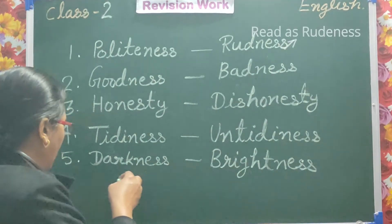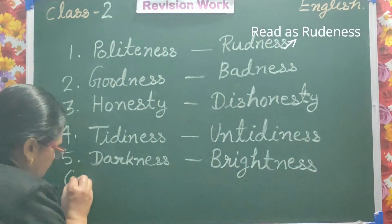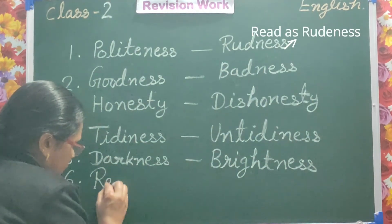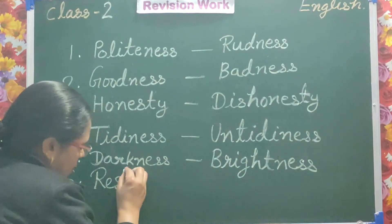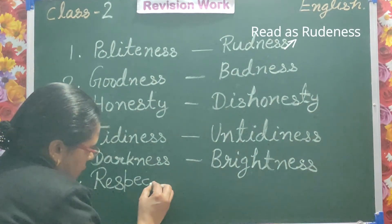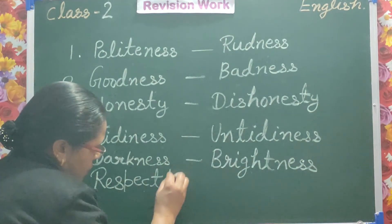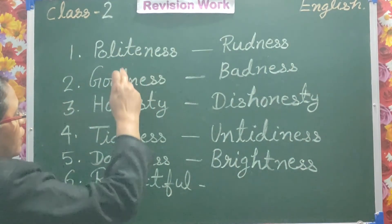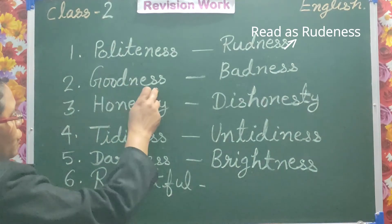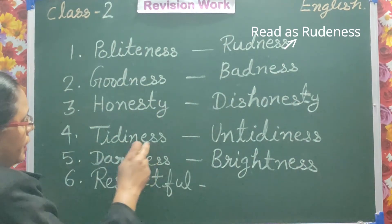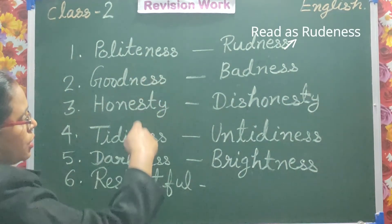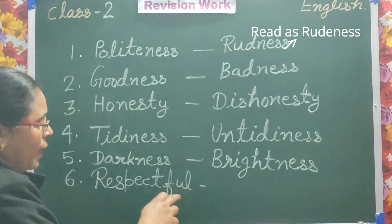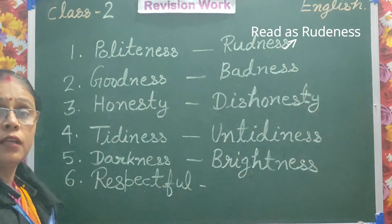Your last word is 'respectful' — R-E-S-P-E-C-T-F-U-L. Politeness, goodness, honesty, tidiness, darkness — all these words are nouns. But 'respectful' is an adjective.